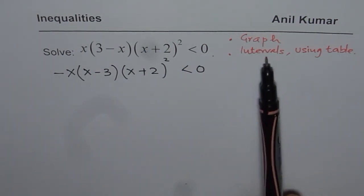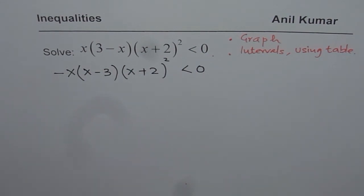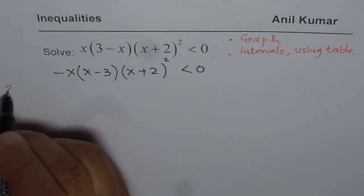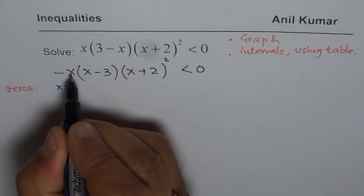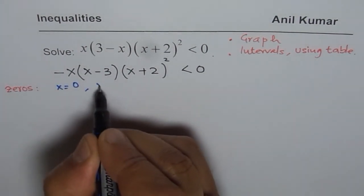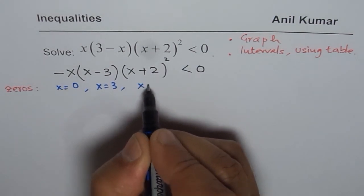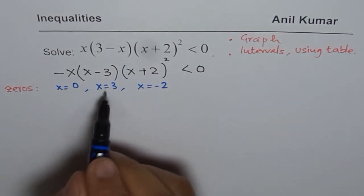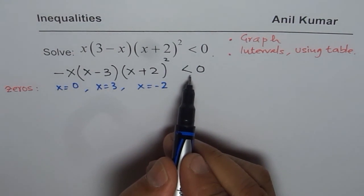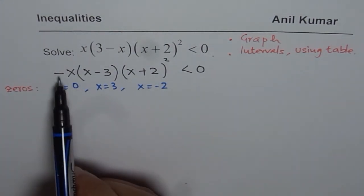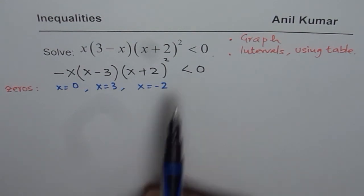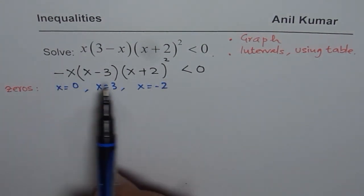To use both methods, the first step is always to find the zeros. In our case the zeros are at x equals 0, x equals 3, and x equals minus 2. These zeros are not part of our solution since we are looking for something strictly less than 0.